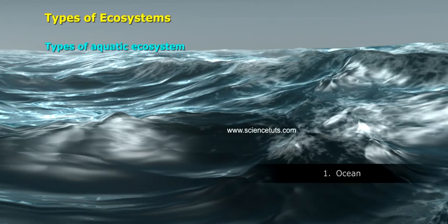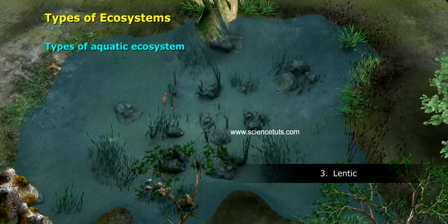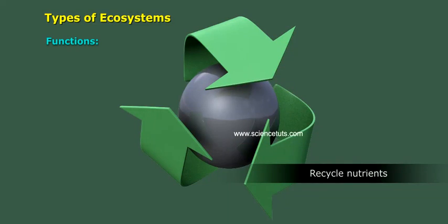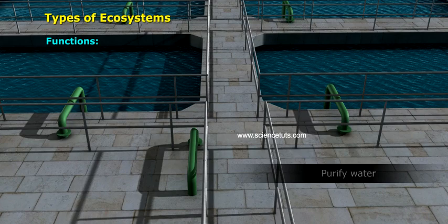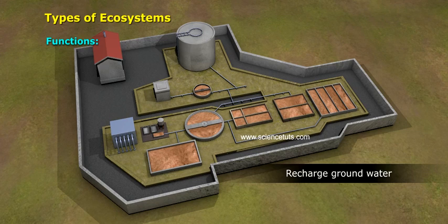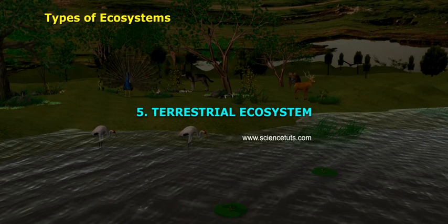Types of aquatic ecosystem: ocean, lotic, and lentic. Functions include recycling nutrients, purifying water, providing proper rainfall, and recharging groundwater.